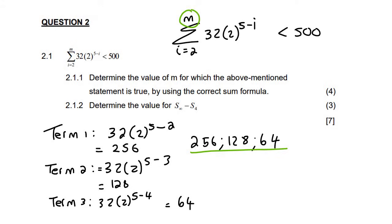What can m be, so that the answer will still be less than 500. Because if n is a big number, like if n is 7, then these numbers are going to go on for too long, and the sum is going to be more than 500.